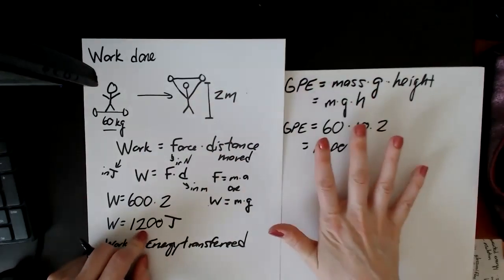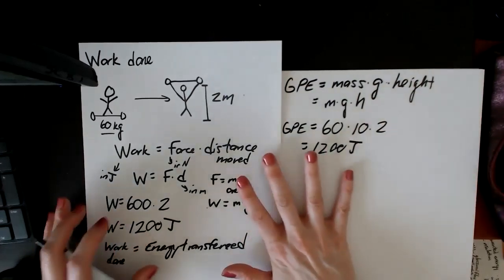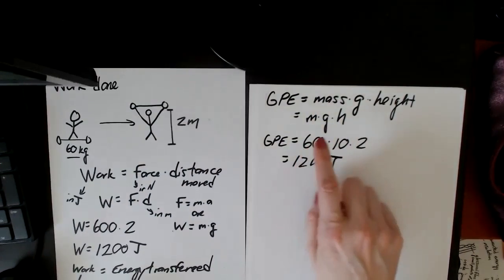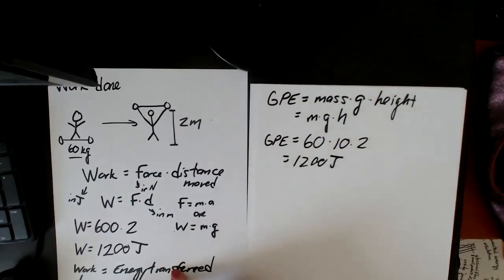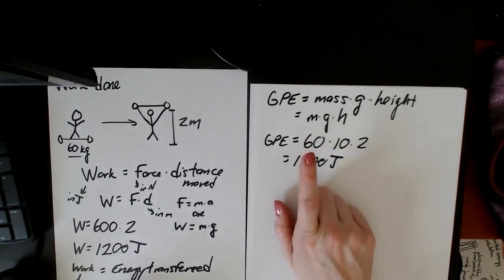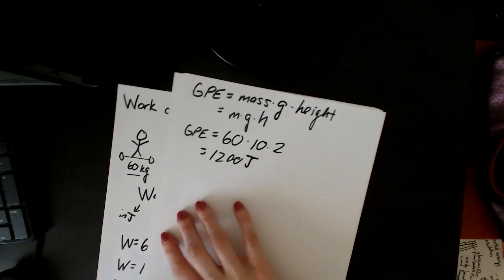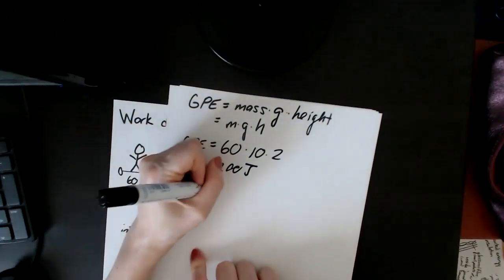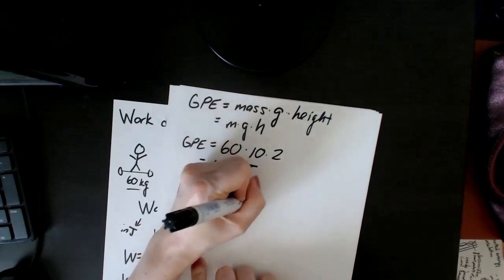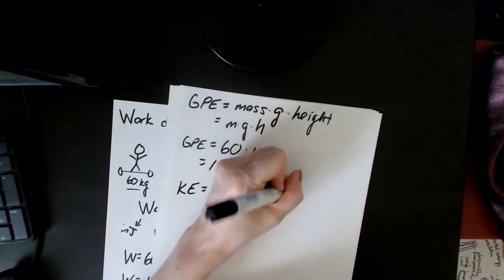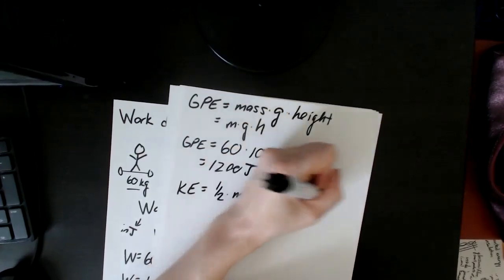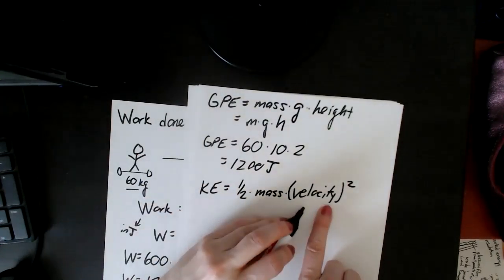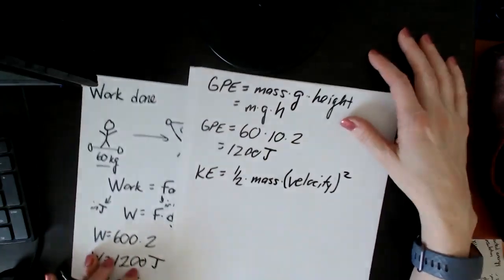That's why the work done equals the energy transferred. And this type of usage of it, you see all the time in the IGCSE. So the work done is equal to the energy that's been transferred, and in this case, the energy that's been transferred is shown by the gain in GPE. Now, the other type of energy we have an equation for is kinetic energy. And this is one half times the mass times the velocity squared.